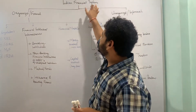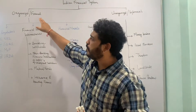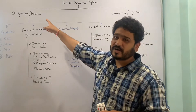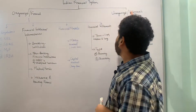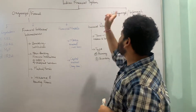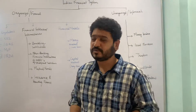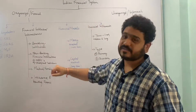The Indian financial system can be studied in two broad forms. One is called organized or formal institutions, and the second is unorganized or informal institutions under the Indian financial system.